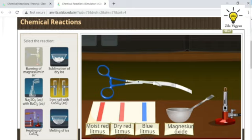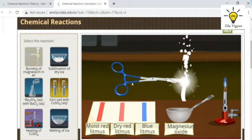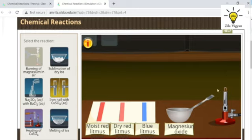This is the website OLabs funded by the Ministry of Electronics and Information Technology. We will first turn on the burner. With the help of these tongs we will bring this magnesium ribbon near the flame. Did you see it burned with a white dazzling flame and these ashes were collected. The ashes are magnesium oxide.